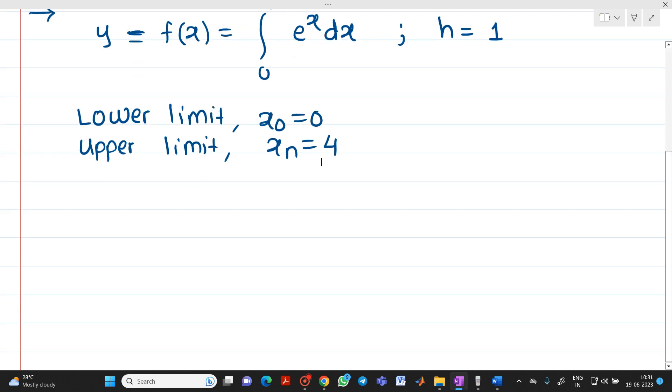Now we know the formula of h. h will be equal to xn minus x0 divided by n. n is the number of entries. So I can re-modify this formula as n will be equal to xn minus x0 divided by h. Since h is given, xn minus x0 is 4 minus 0 divided by h which is 1. We get n equal to 4.